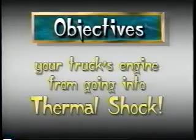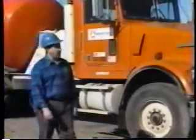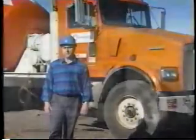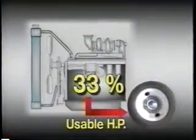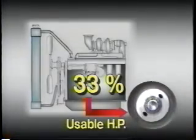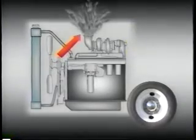Diesel engines generate a lot of heat — approximately 3,000 to 3,500 degrees Fahrenheit — yet only 33 percent of this generated heat is converted into usable horsepower. Roughly 30 percent is discharged out the exhaust system.